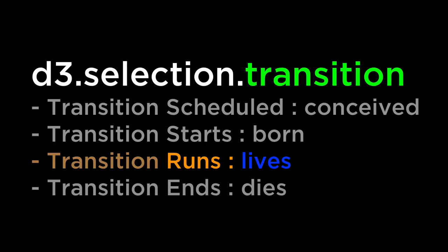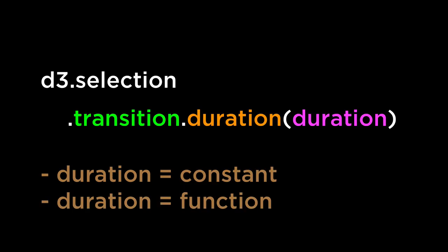Modifying transition duration. The transition runs according to the duration specified. The D3 transition default duration is 250 milliseconds — if no duration is specified, the default is used. The transition duration is calculated in milliseconds and can be a constant value or a function. If the duration is a constant value, all elements within the selection are given the same duration and the transition will take the same amount of time for all elements. If the duration is a function, different elements will be given different durations and the transition will end at different times.